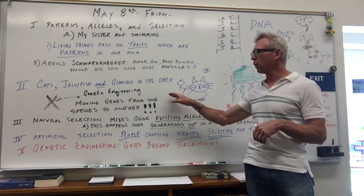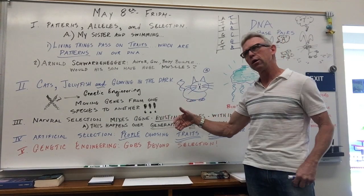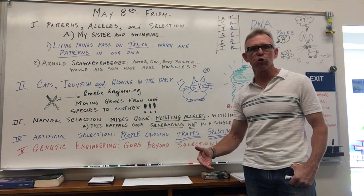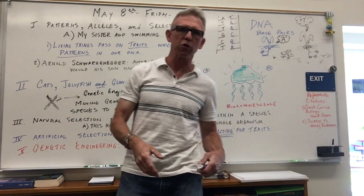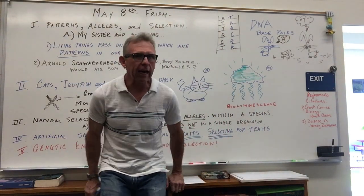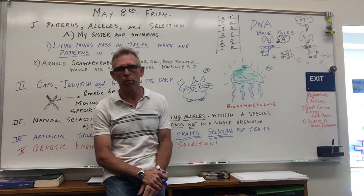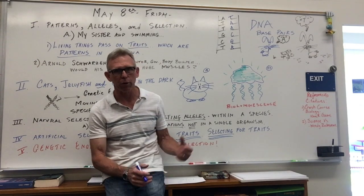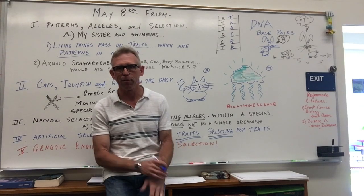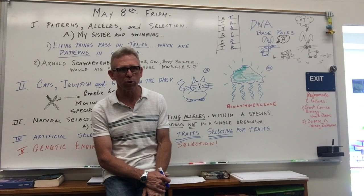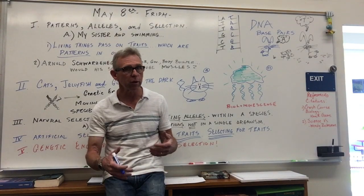Let's look at how humans have gone a little bit beyond natural selection, in the case of cats, jellyfish, and glowing in the dark. A cat has 19 pairs of chromosomes; a jellyfish has 22 pairs of chromosomes. Completely different species — a mammal and a cnidarian — that in nature couldn't possibly mate and have kids. Wildly different chromosomes, wildly different lifestyles, completely different evolutionary branches.